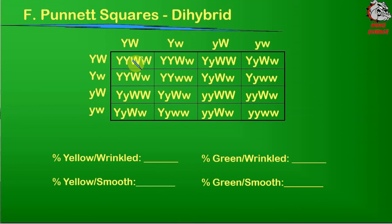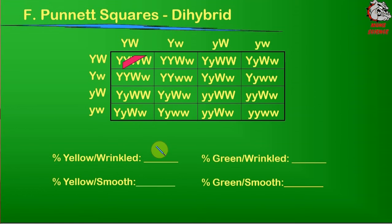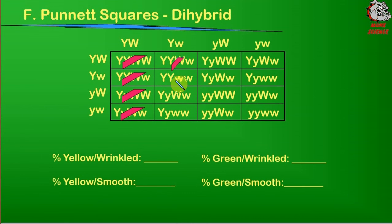Let's start by finding all the ones that are yellow and wrinkled. To be yellow, you have to have at least one capital Y; and to be wrinkled, you have to have at least one capital W. I like to mark these out as I go so I can count them at the end without recounting. Going through all 16 cells, I'm identifying which have at least one capital Y and at least one capital W — those are yellow and wrinkled — versus those that are yellow but not wrinkled, or not yellow at all.